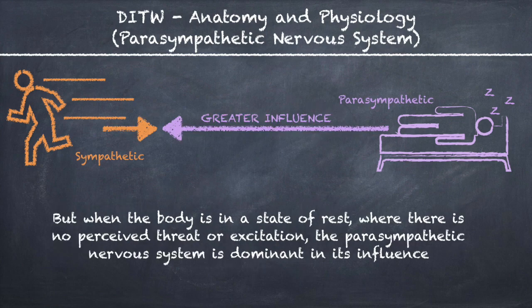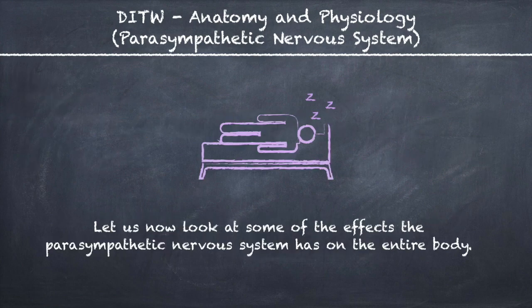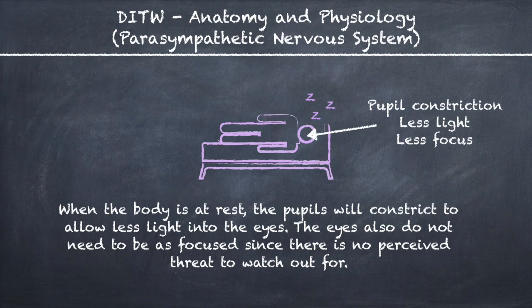But when the body is in a state of rest where there is no perceived threat or excitation, the parasympathetic nervous system is dominant in its influence. Let us now look at some of the effects the parasympathetic nervous system has on the entire body.